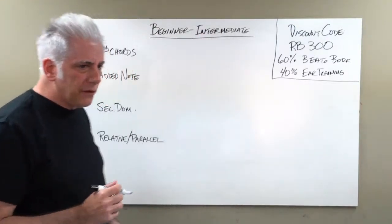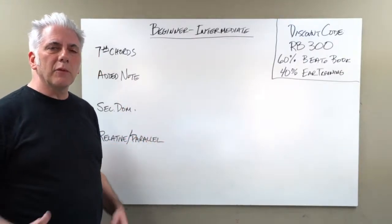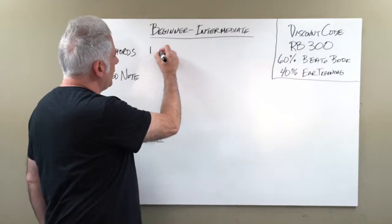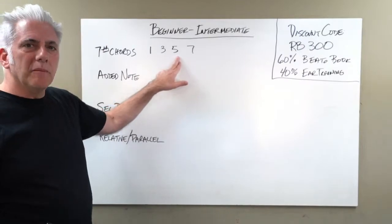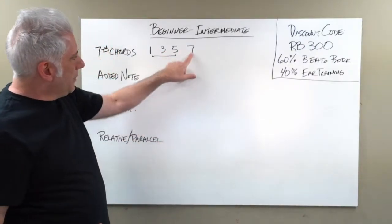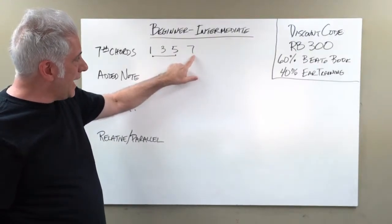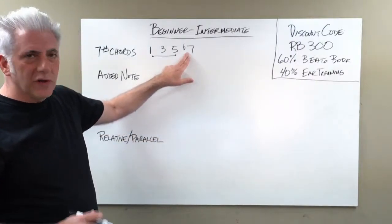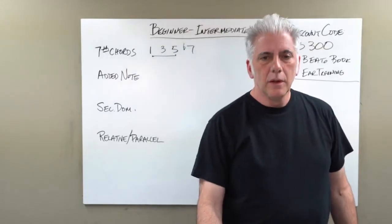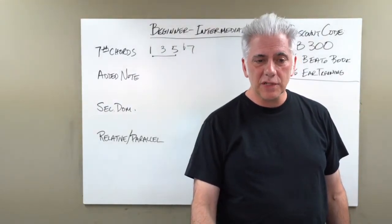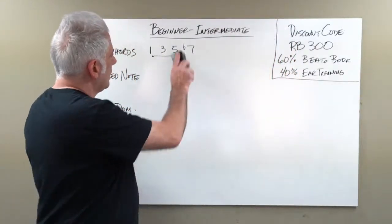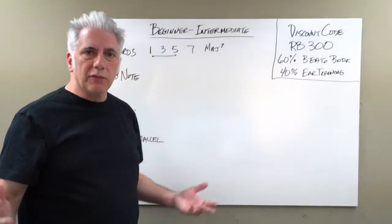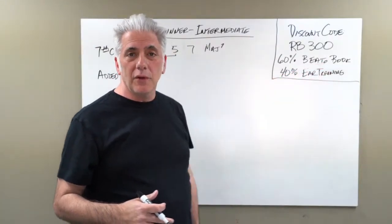Let's start with seventh chords. Using the formula from last week: if the major scale is just one through seven, what is a seventh chord? A seventh chord is 1-3-5-7. The first part of a seventh chord is a major triad. A major seven chord - if it's in the key of C, you've got C, E, G, B. That's C major seven: 1-3-5-major 7.